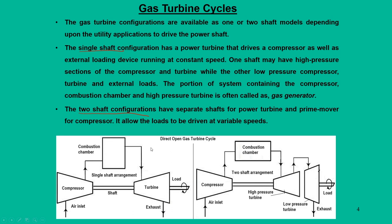Air enters the compressor at state 1 — normally it is atmospheric air. After compression, it enters the combustion chamber at state 2. In the combustion chamber, fuel is added — fuel plus compressed air gets combusted, similar to IC engines. From this, we get the combustion products at state 3. These combustion products expand in the turbine and exhaust comes out at state 4. Power is developed on the shaft by the turbine.